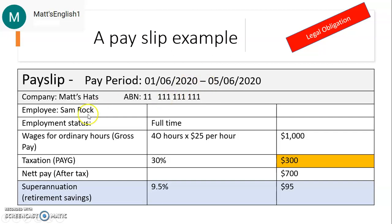Your company must include the company name on your payslip. In my example here, I've called my company Matt's Hats. The company must also include their Australian Business Number, their ABN, which should be an 11-digit number. This allows us to check that the company is working correctly and legally.